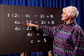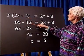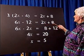3 times 2x is 6x, 3 times minus 4 is minus 12, and this is equal to 2x plus 8.